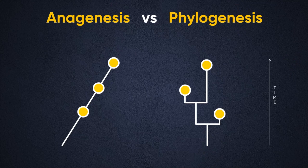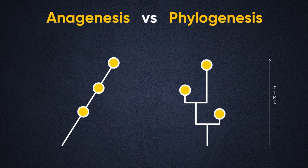Here you see two different models of evolution. Anagenesis is where you have one species that evolves into a new species, and that new species replaces the old species as evolution occurs. In phylogenesis, you have splitting that occurs — one population splits in two and gives rise to a new species that way, and so on into the future.